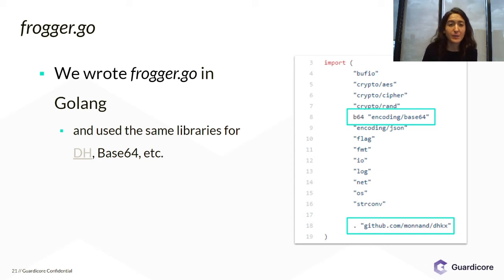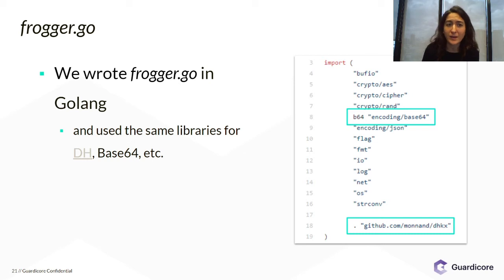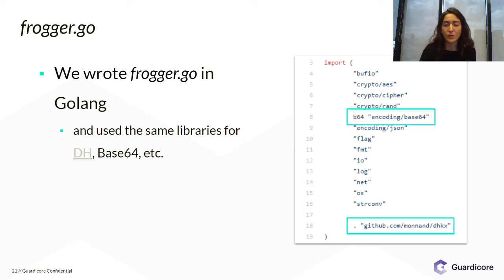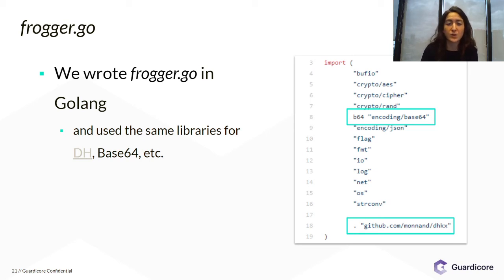We also used the same libraries that the malware used, and fortunately these are present in the Golang binary because they're statically linked and their file names and paths are saved quite clearly. So we used the same formatting libraries and the same Diffie-Hellman key exchange library, which is of course open source. But we also had to use the same representations and data structures that the malware was using.